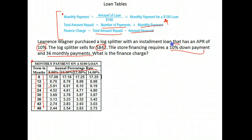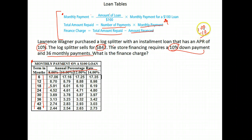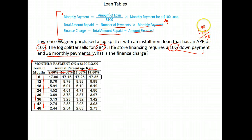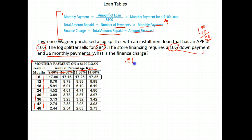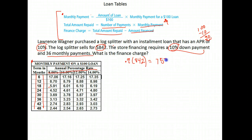He's paying 10% down, so let's use the complement method. If he's paying 10% down, what percent is left for the loan? We get 100 minus 10, which is 90 — move the decimal two places to the left to change that to a decimal. So he's going to finance 90% of the loan. We take 0.9 times 842, the price of the log splitter, and we get seven hundred and fifty-seven dollars and eighty cents. This is the amount he's financing, or the amount of his loan.